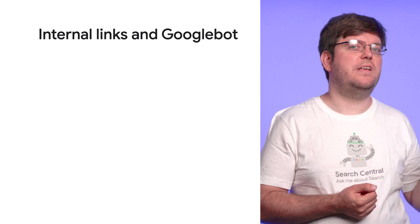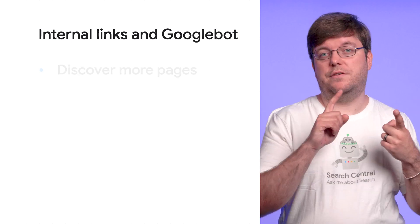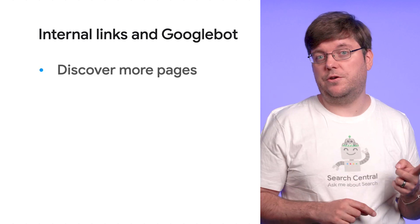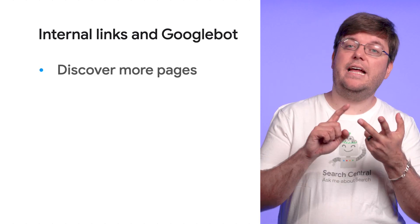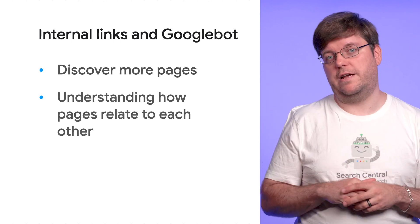So we've talked about how users use links to navigate your website, but how does this relate to Google Search? Well, Googlebot uses links as well. Googlebot uses internal links primarily for two things: discovering pages on your site and understanding the relation of pages on your site.